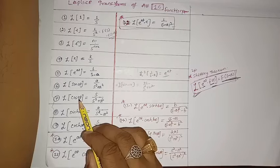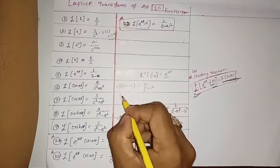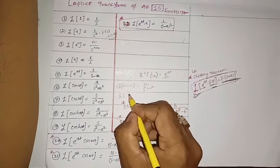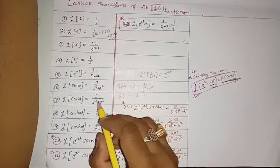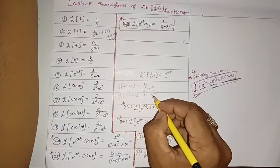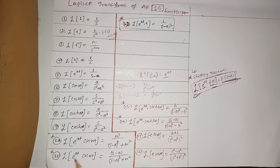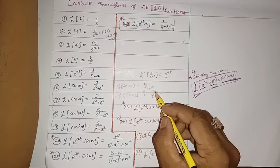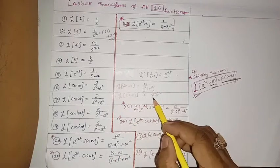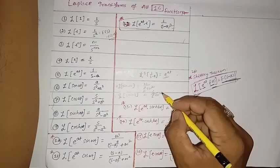For e^(at)·cos(ωt): the Laplace transform of cos(ωt) is s/(s²+ω²). When multiplied by e^(at), applying the shifting theorem, s is replaced by (s-a), giving (s-a)/((s-a)²+ω²).